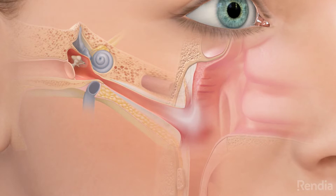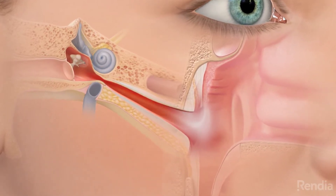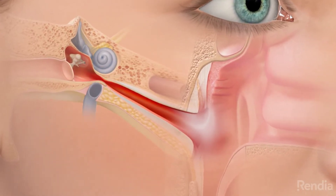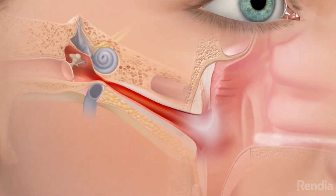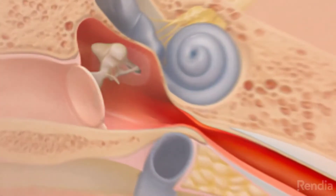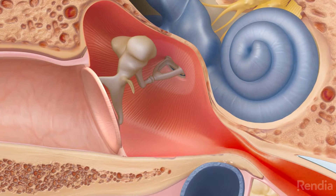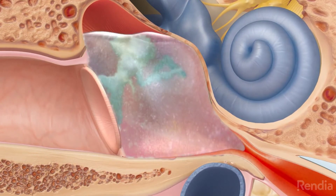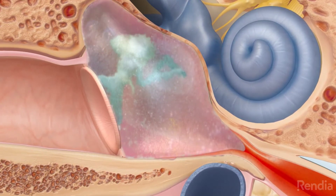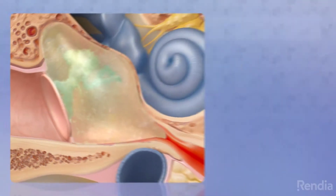When the ears are infected, the lining of the eustachian tubes becomes inflamed and swollen and blocks air from traveling to the middle ear. If air is unable to enter the middle ear, then fluid can accumulate in the middle ear space. This fluid may become infected over time.